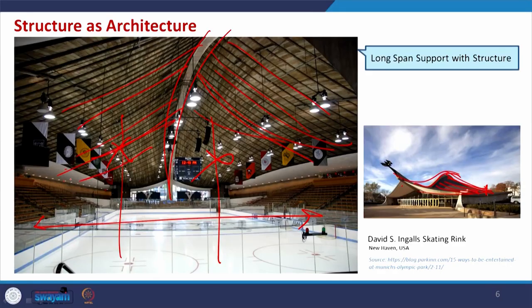The structure dominance is seen all through. From both sides at the middle there is a rib, connected with a symmetrical design, finally providing long-span support with structure. This is one example of structure as architecture. In many indoor buildings, if you search for good examples, you will find that this is basically a structure rather than a form — whatever structure is created with a basic form comes as structure as architecture.